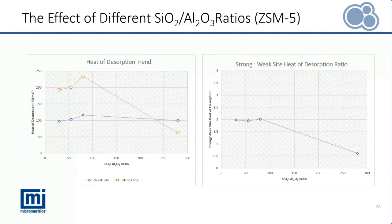The heat of desorption for each ratio was calculated in the same manner as previously discussed. The heat of desorption for the weak sites is plotted in blue and for the strong sites in orange. There is an interesting increasing trend up to 80 to 1 silica alumina ratio, which then drastically decreases for the 280 to 1 ratio. This initial upward trend implies the binding strength of the acid sites increases with the increasing silica to alumina ratio, which could be related to the higher electronegativity of the silicon atom compared to aluminum, causing the basic probe molecules to be more tightly bound to the sites.